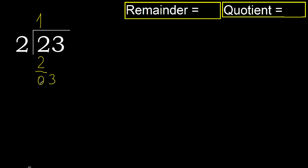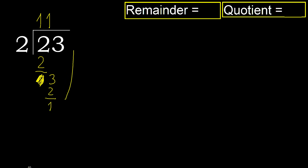Next, bring down. Eliminate 0 on this side. 3 multiplied by 2 is 4, which is greater. 2 multiplied by 1 is 2, which is not greater. Subtract. Next — that is not a number, therefore finish it.